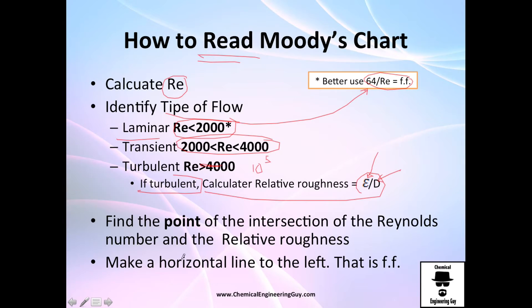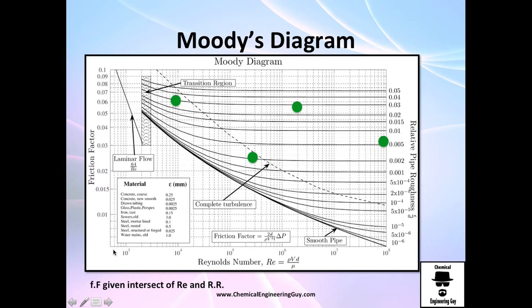Find the point of intersection and then make a horizontal line to find the friction factor. So for example, this has a Reynolds number of this, this has a Reynolds number of this one, this has a Reynolds number of this and this has a Reynolds number of almost 10 to the 8th. This is 2 times 10 to the 6th, this is about 2.5 times 10 to the 5th and this is about 10 to the 4th.